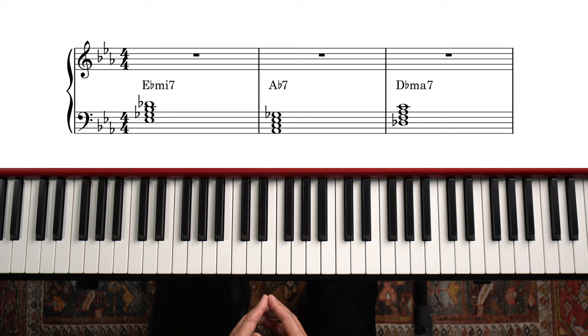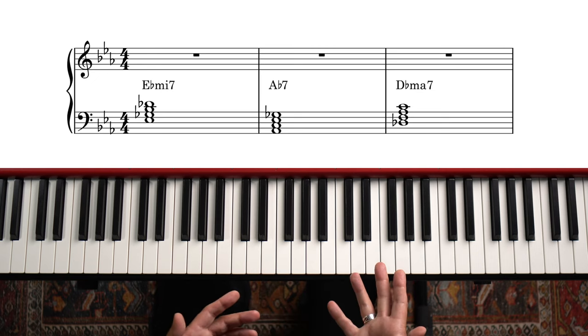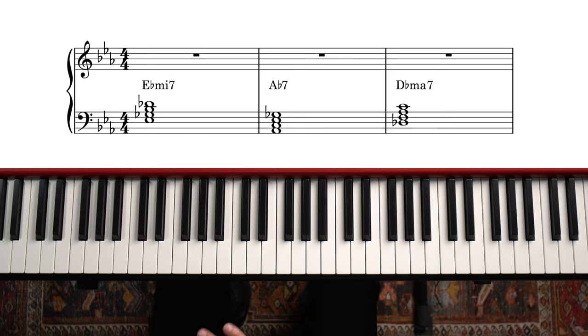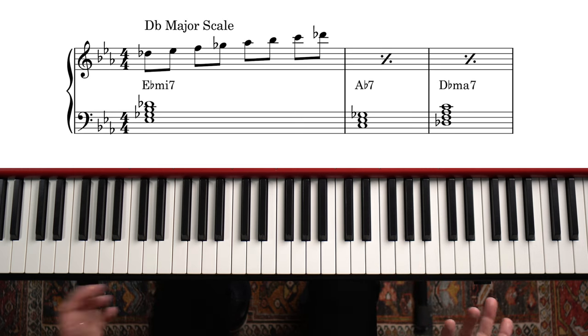The part of the song that is in D-flat is very simple. E-flat minor seven, A-flat seven, and D-flat major seven are all diatonic chords in the key of D-flat major, so we can just use a D-flat major scale over all three chords.